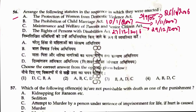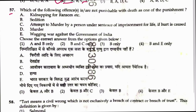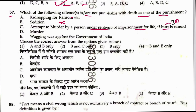Question 57: Which of the following offences is not punishable with death? Kidnapping for ransom — yes, punishable with death. Sedition — no, it was removed. Attempt to murder by a person under sentence of imprisonment for life if hurt is caused — yes, Section 307, now Section 109 in Bharatiya Nyaya Sanhita. Murder — now Section 101 in BNS. Waging war against government — earlier Section 121, now Section 147 in BNS. Only option B (sedition) does not carry death penalty. Answer is 3.